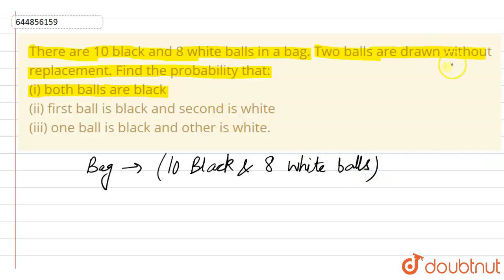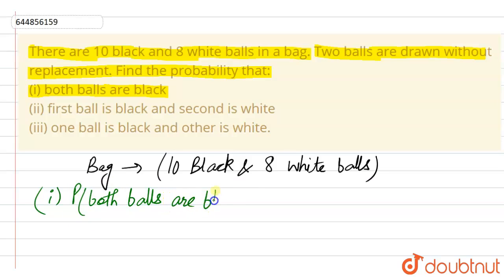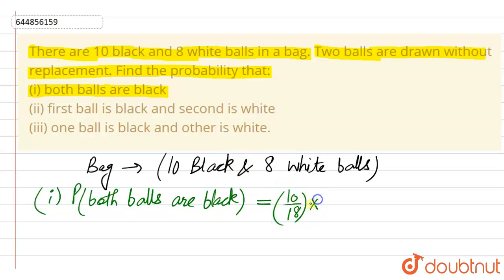We are drawing the balls one by one without replacement. For the first case, the probability that both balls are black — out of 18 total balls, the first ball needs to be black. We have 10 black balls, so the probability for the first ball to be black is 10 by 18. When we have chosen one black ball there is no replacement, so we are left with nine black balls for the second draw.